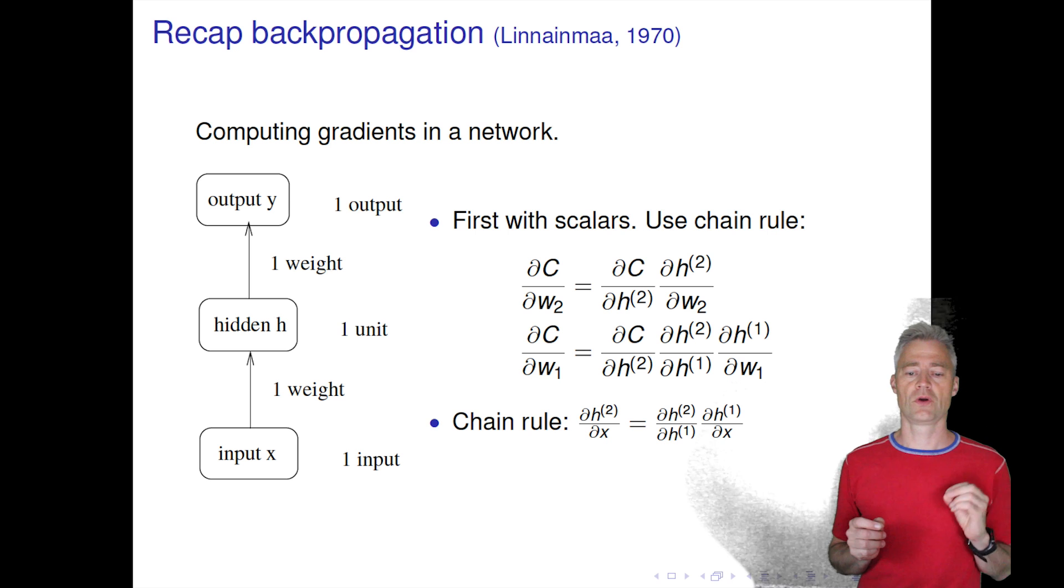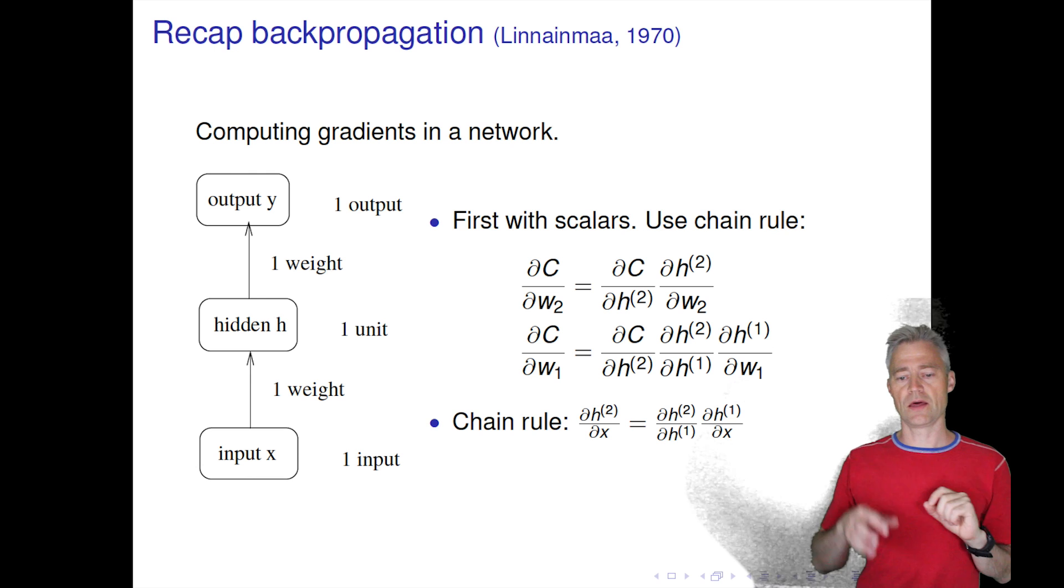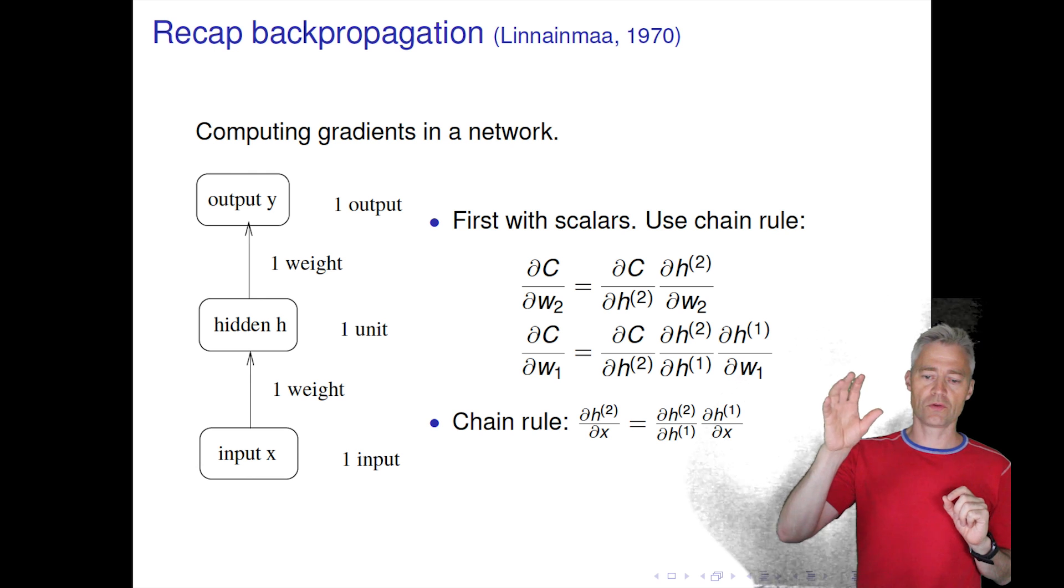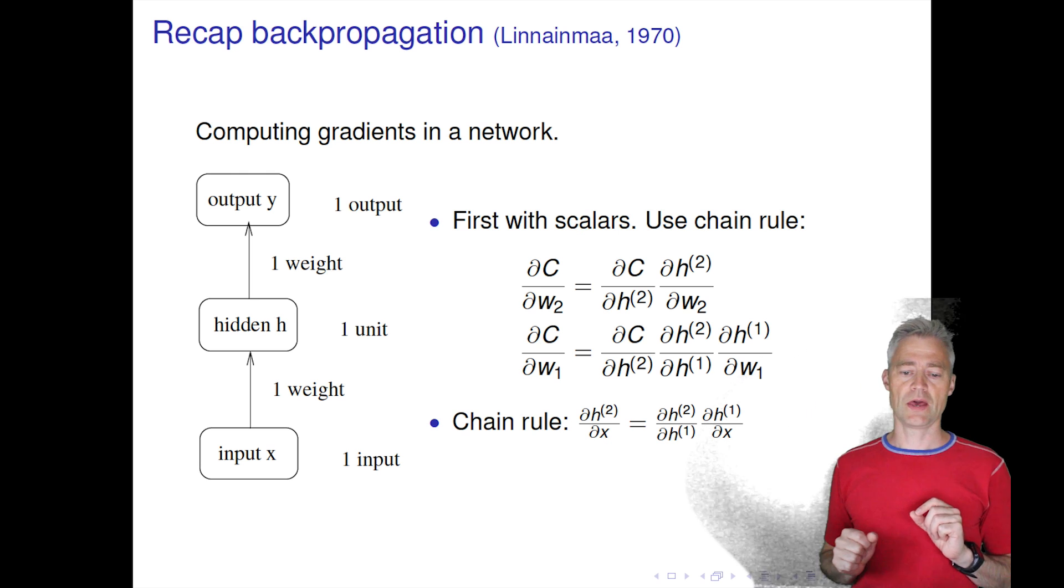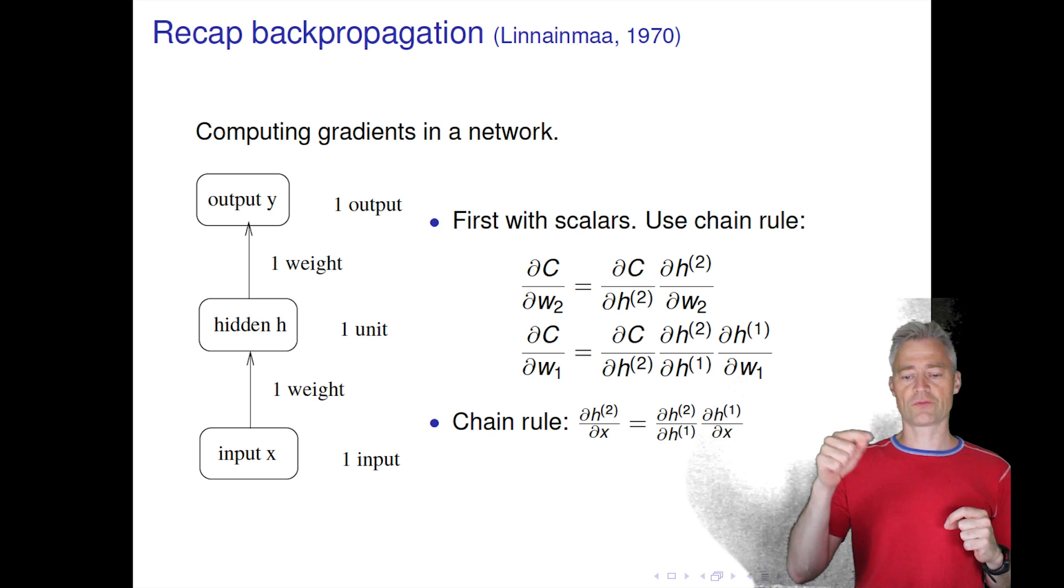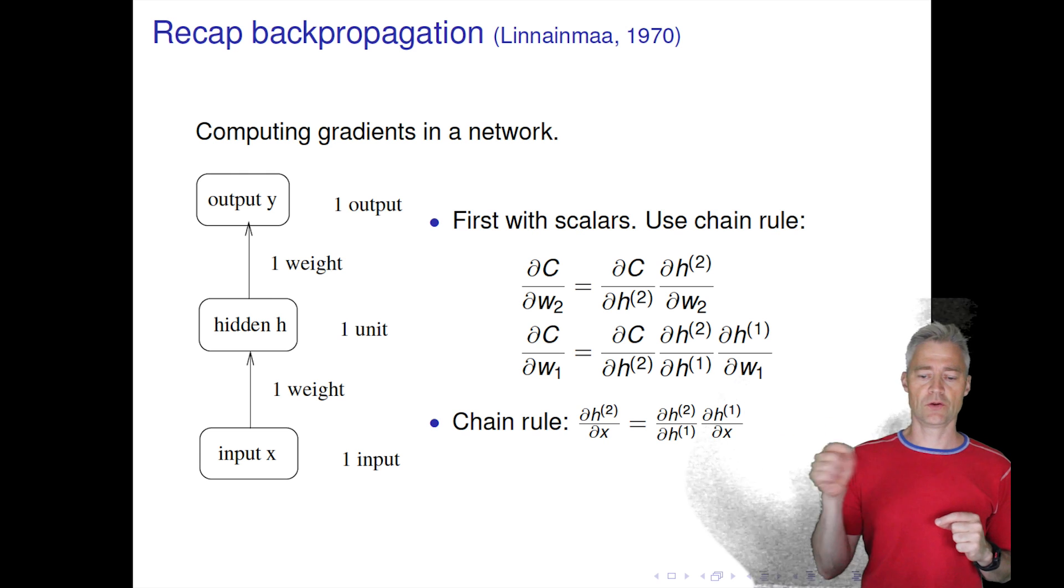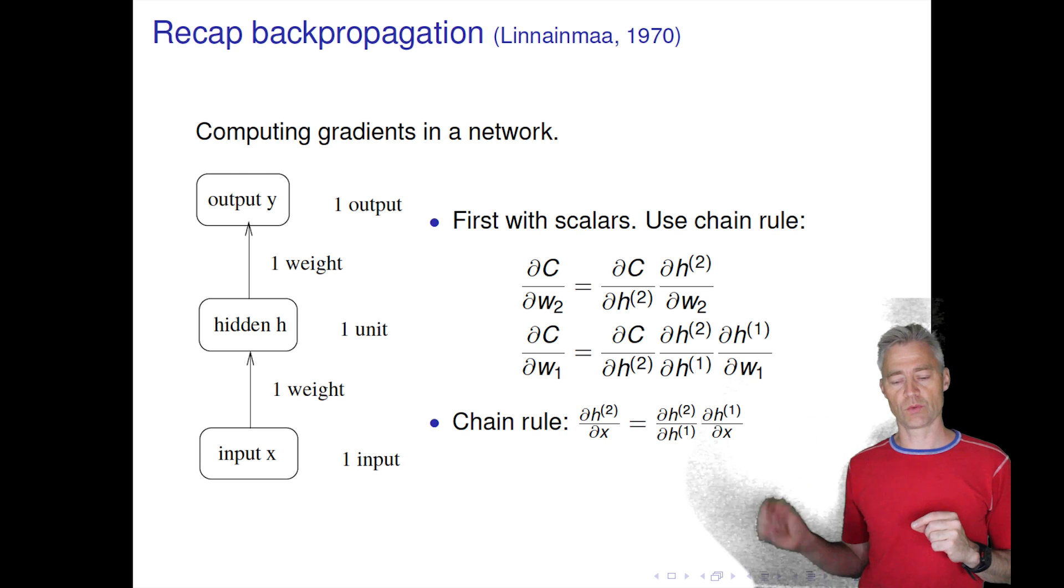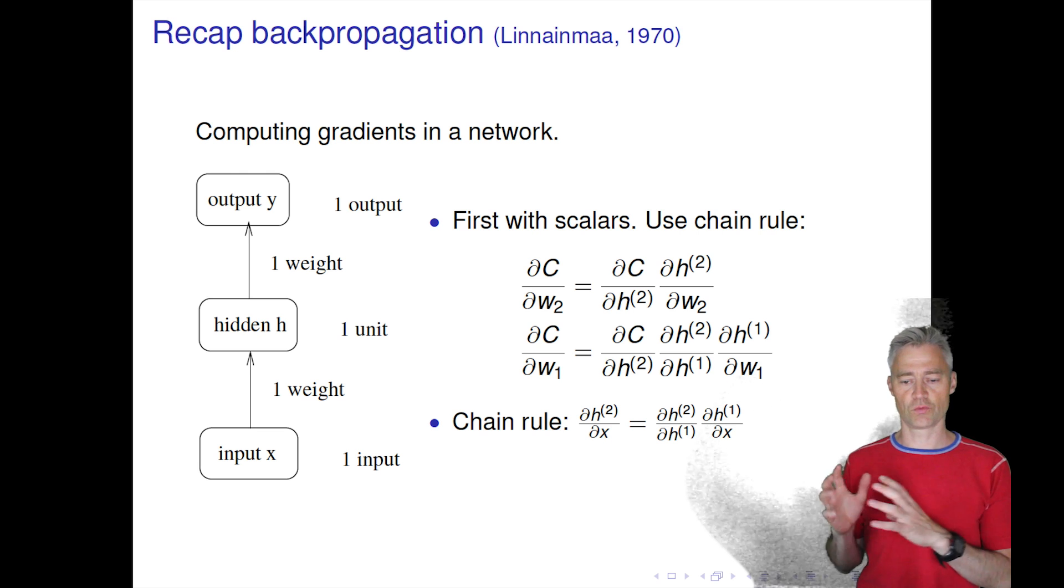First, our cost function only depends on the activations at the second layer, and in turn the weights in the second layer depend on these activations. For the weights in the first layer, we have to use the chain rule of differentiation one more time to get to the point where we can take the derivative of the activation with respect to the weights.